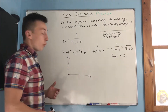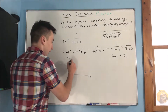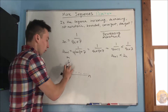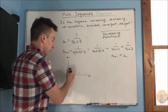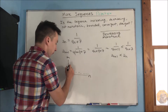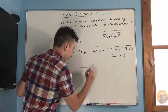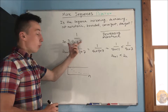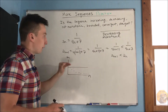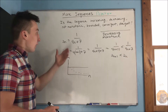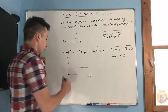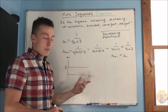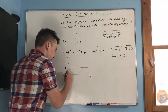Now, is this sequence bounded? We know that one over four n plus seven decreases from its starting point. The first point — when we plug in n equals one — gives us one over eleven, and that's our maximum value, so it's bounded above by one over eleven.